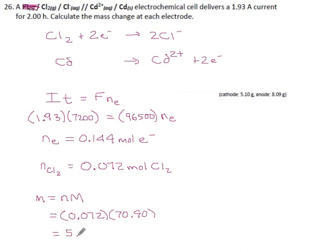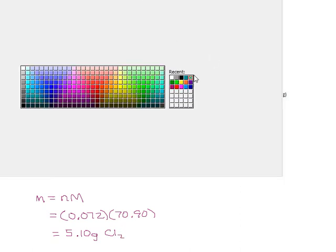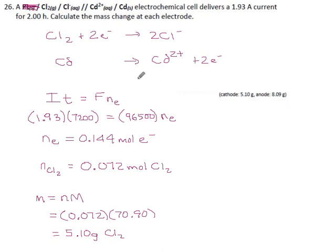Happening at the same time, we have cadmium getting oxidized. Going for the same number of electrons, we can look at our cadmium reaction - it tells us the same thing the chlorine did. It says for every two moles of electrons that you have, you get one mole of cadmium. So again you take the number of moles of electrons and divide by 2, and you get 0.072 moles of cadmium. We find the mass the same way: number of moles times molar mass. The molar mass for cadmium is 112.41.